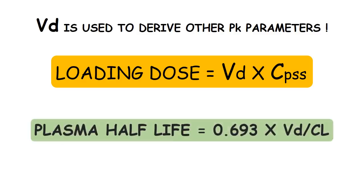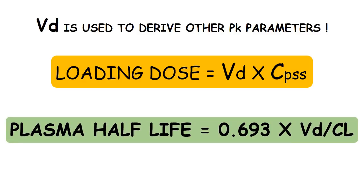Another very important parameter is the plasma half-life of a drug, which is 0.693 multiplied by the volume of distribution divided by the clearance of the drug.